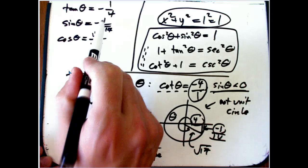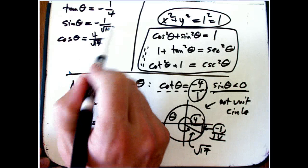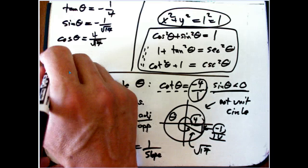And notice the ratio of these guys. Sine over cosine. The root 17's cancel. I get minus 1 fourth. It is the right sign. And then the other ones are easy.